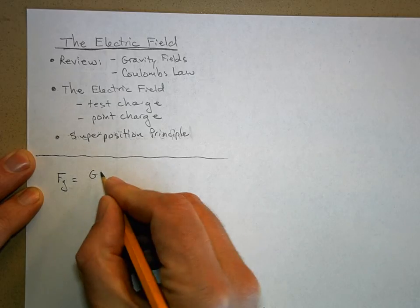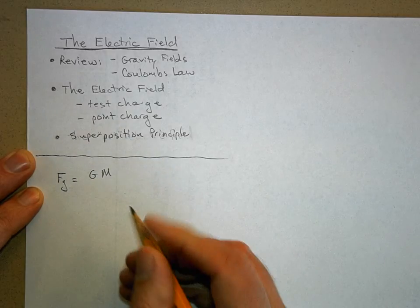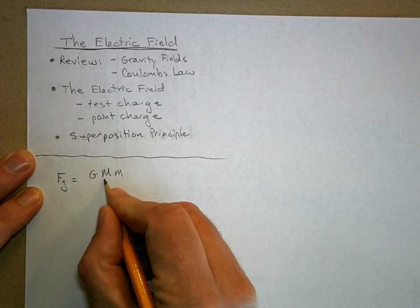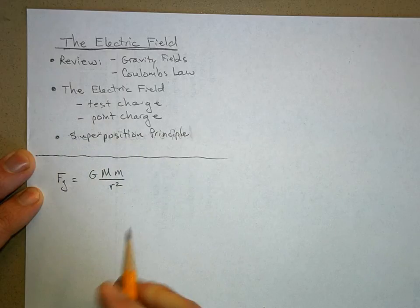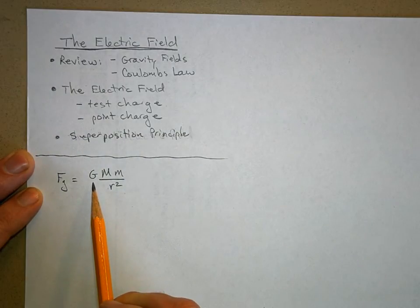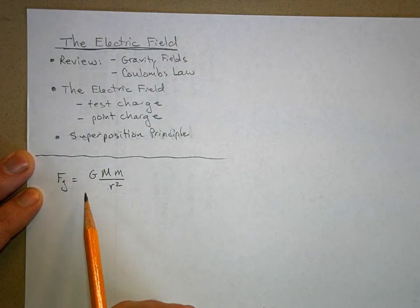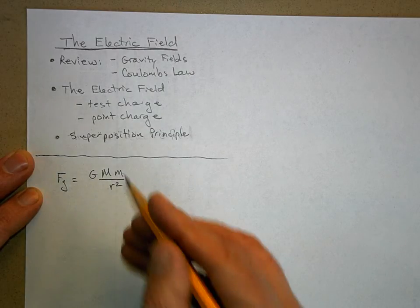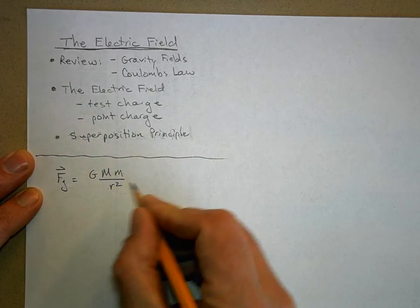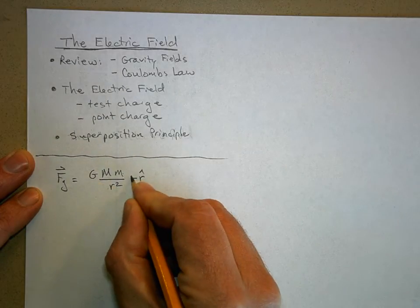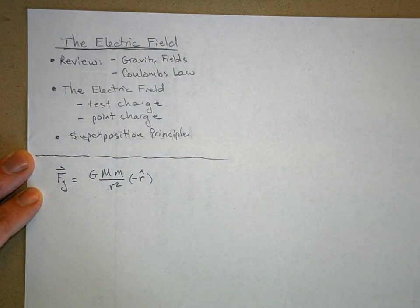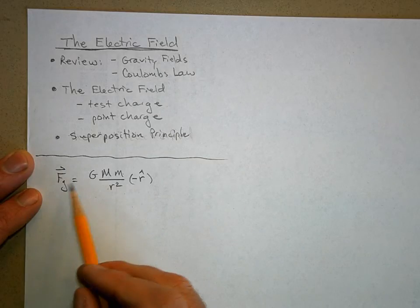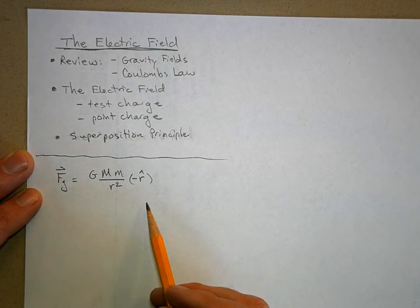The force of gravity was equal to G times the mass of one object times the mass of the other object over r squared. Remember, G was a constant of nature — it describes how strong gravity is in our universe. These are the two masses, r is how far apart they are, and we have to make this a vector by giving it a negative r-hat direction.